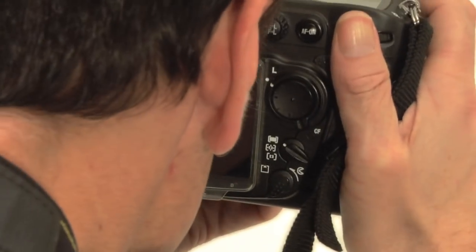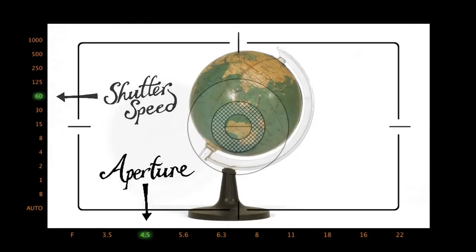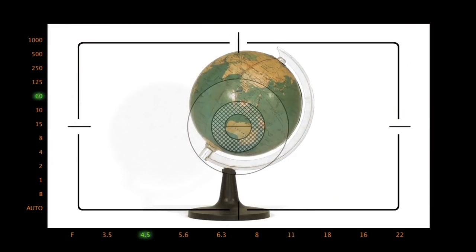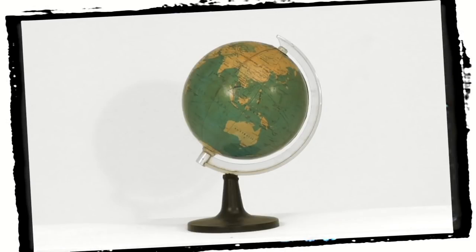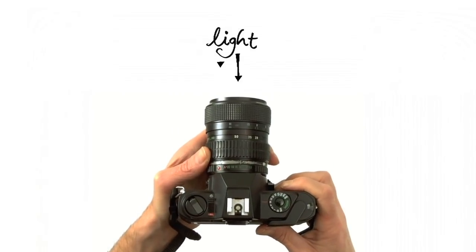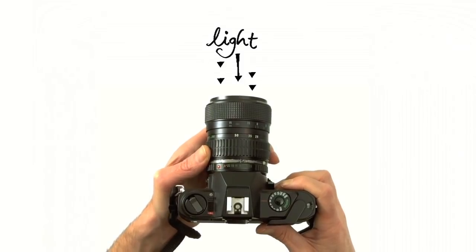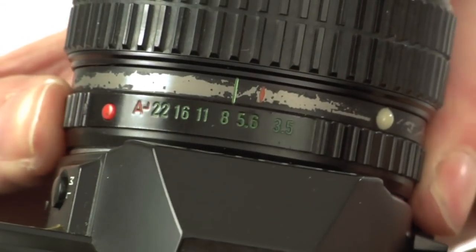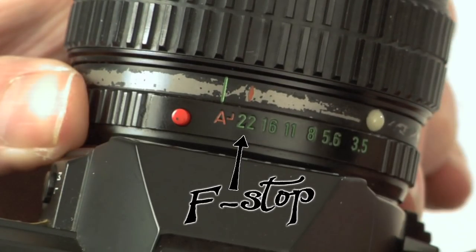Aperture and shutter speed work together, so if you adjust one, you should check your light meter and maybe adjust the other. Your aperture affects how much light gets in by shrinking or enlarging the hole the light travels through. This is measured in f-stops. A high f-stop means a smaller hole, which lets in less light and gives you a longer focal length or depth of field.